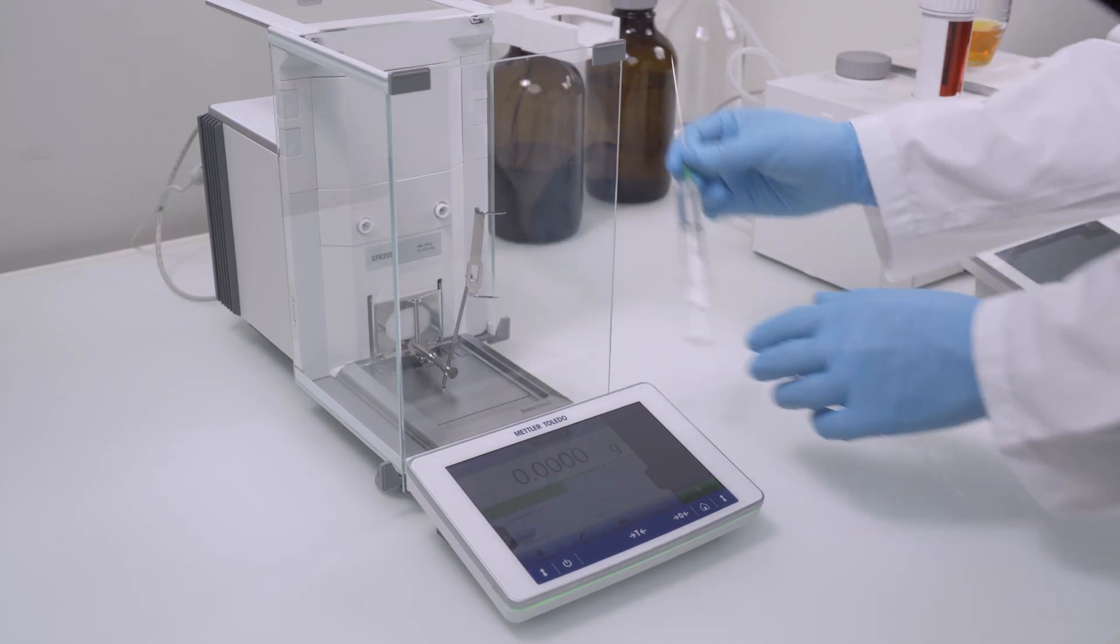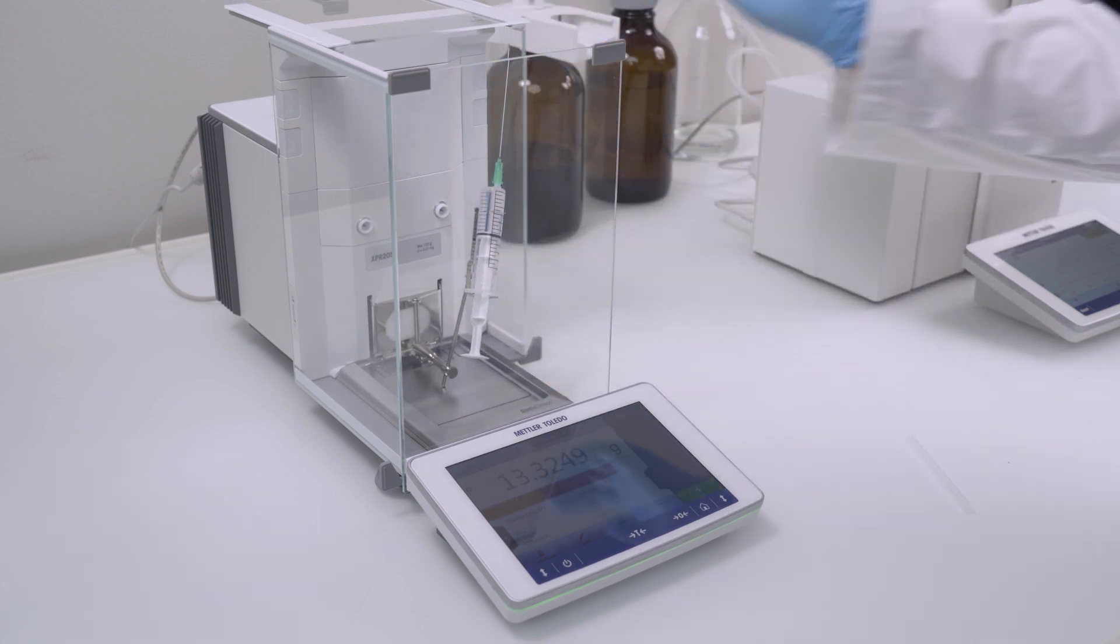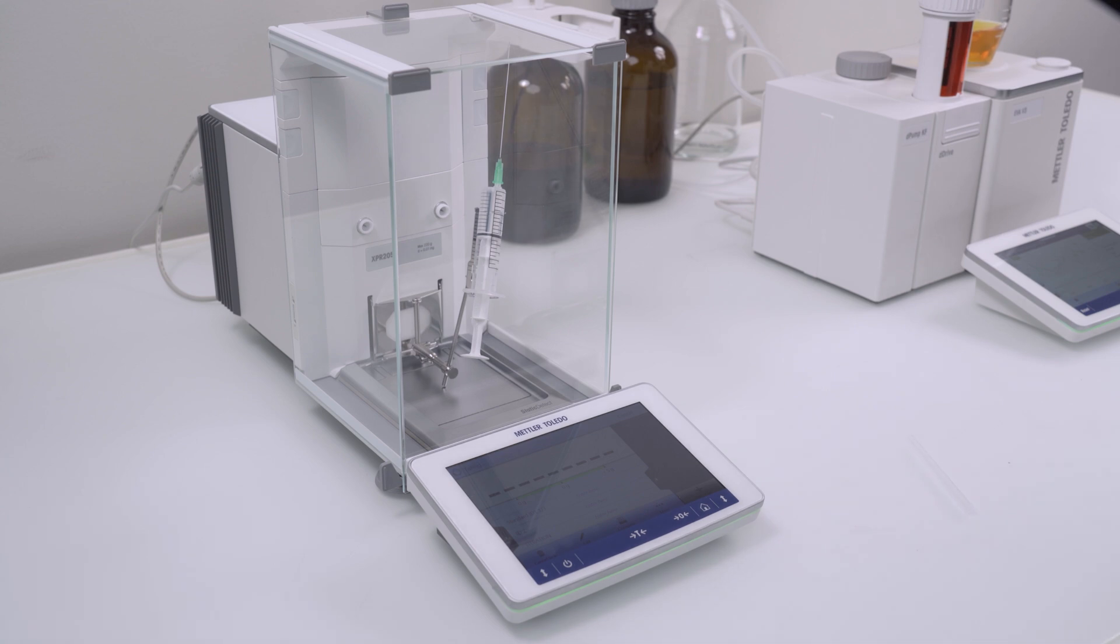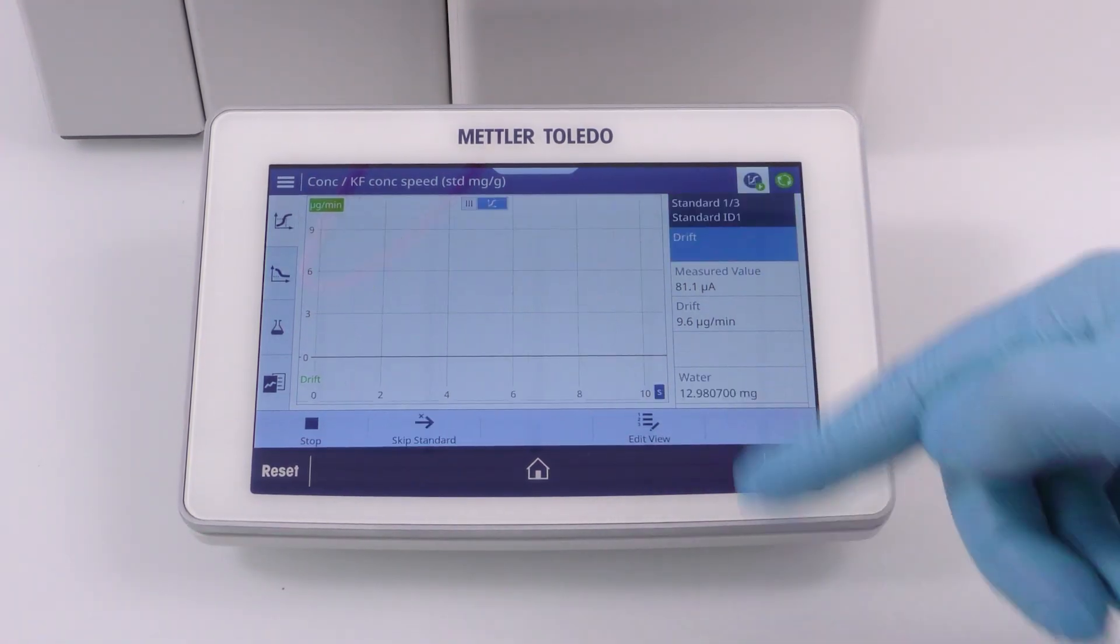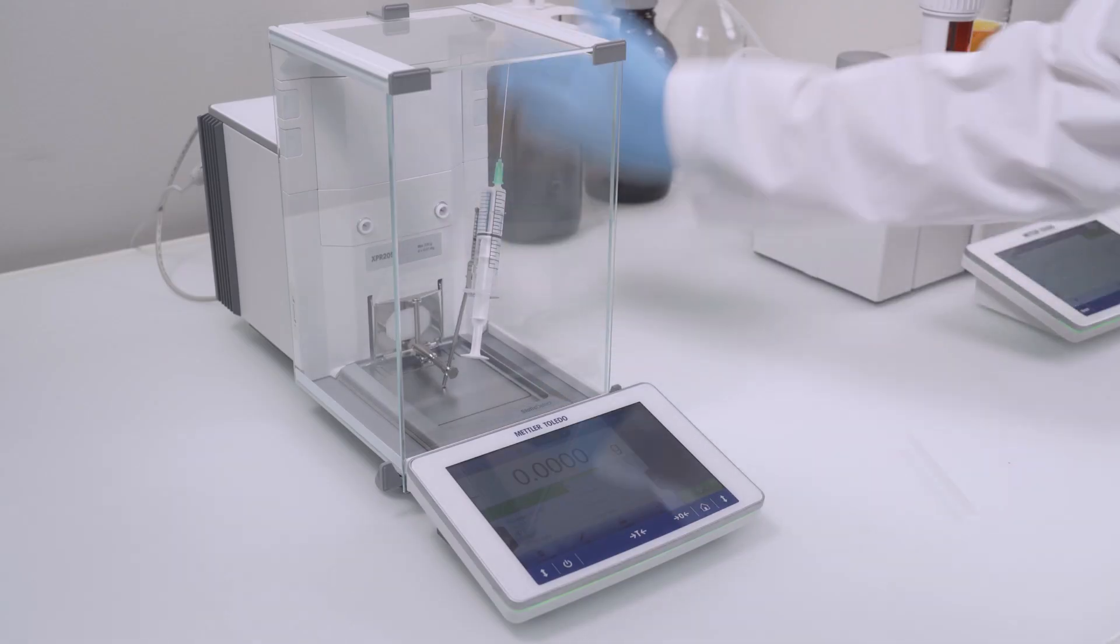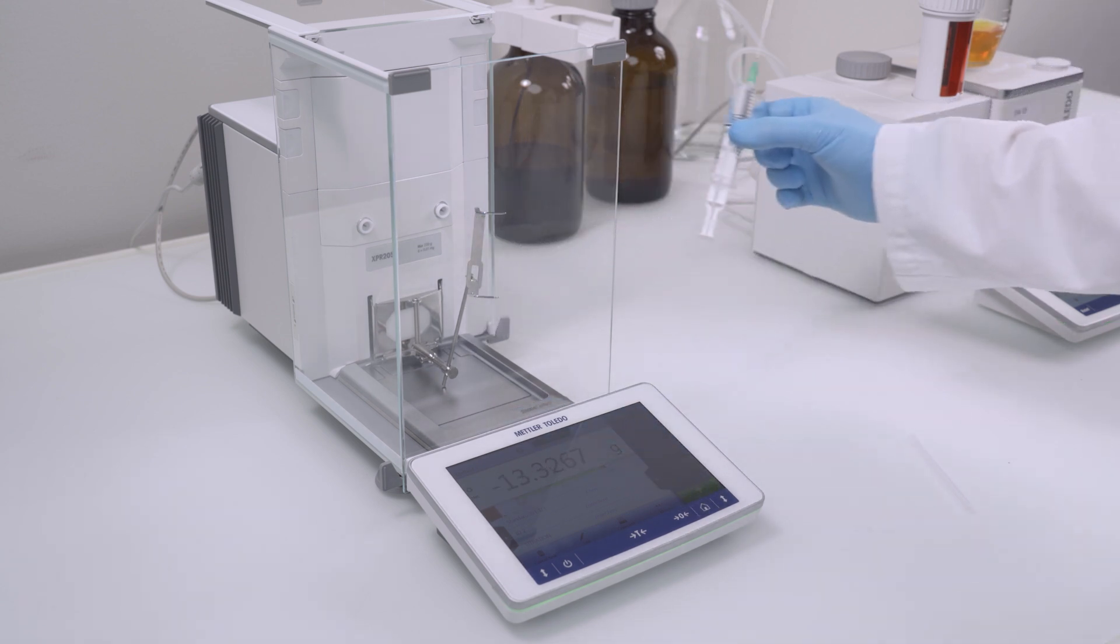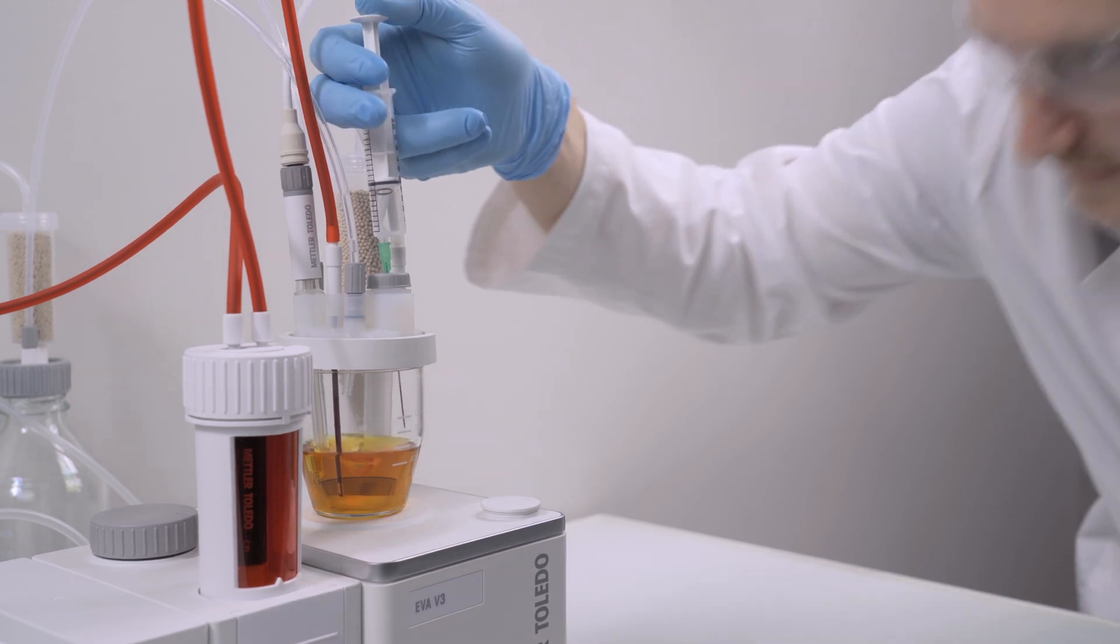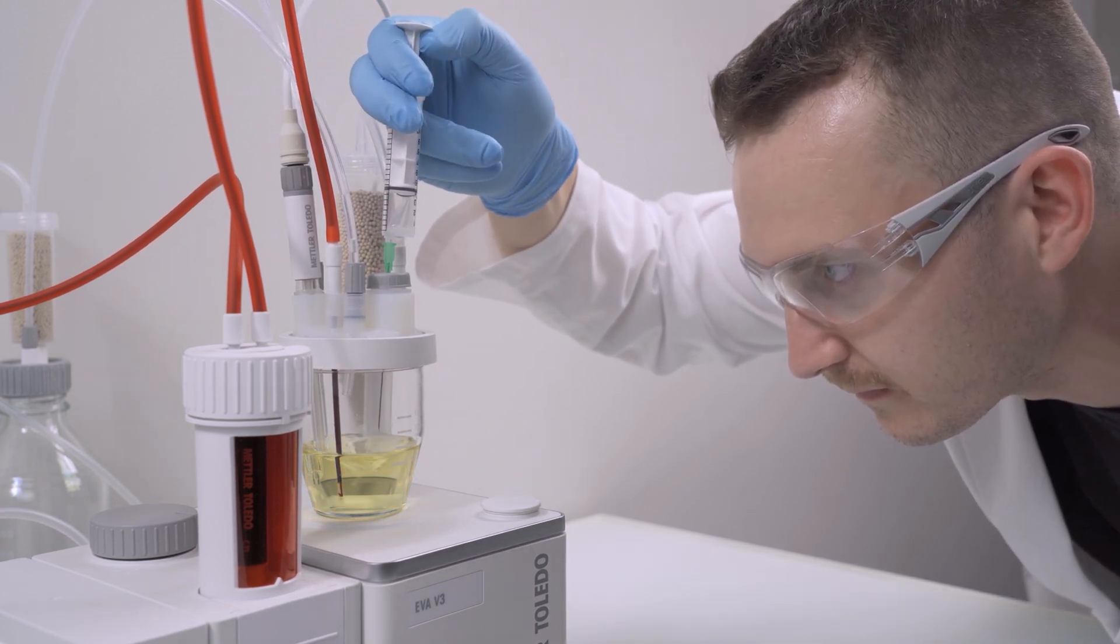Tare the full syringe on a suitable laboratory balance. Click on Start Standard and inject a sample with an absolute amount of water of around 10 mg. The sample has a water content of 10 mg per gram. Thus, I inject here 1 gram of sample. During injection, watch the tip of the needle and make sure that every single drop reaches the solvent.